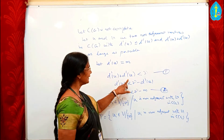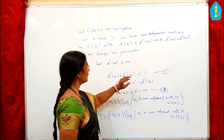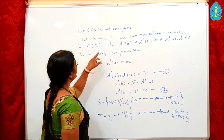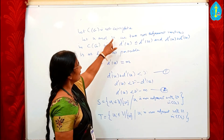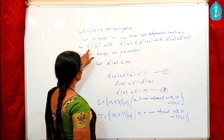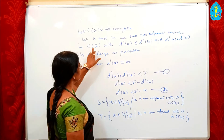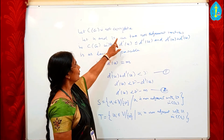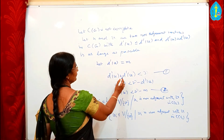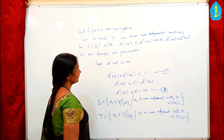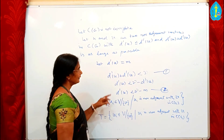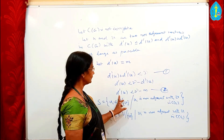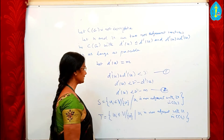Then D'(U) + D'(V) < gamma, since in C(G) we cannot join U and V unless D'(U) + D'(V) ≥ gamma. With D'(U) = M, it follows that D'(V) < gamma − D'(U), that is D'(V) < gamma − M.